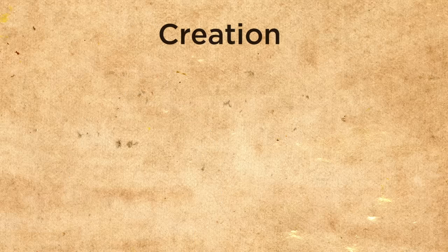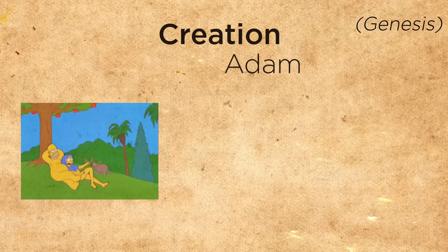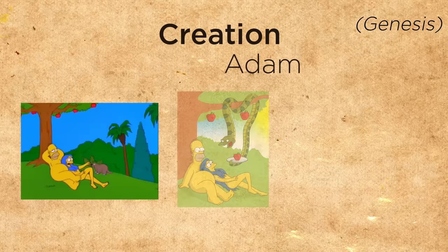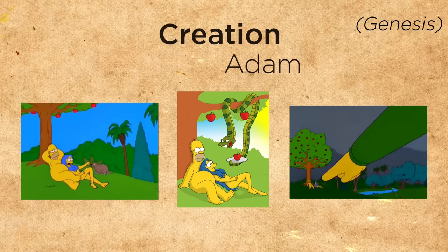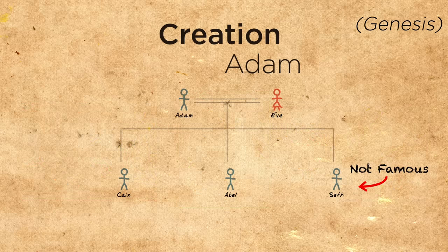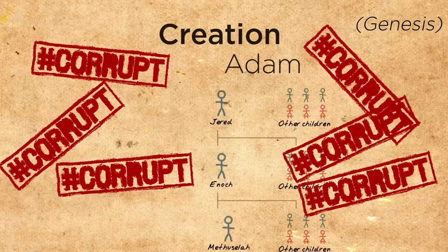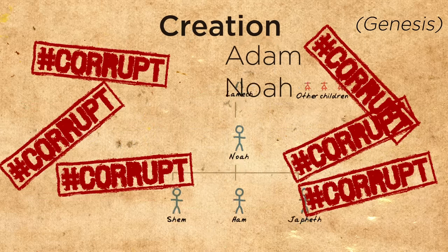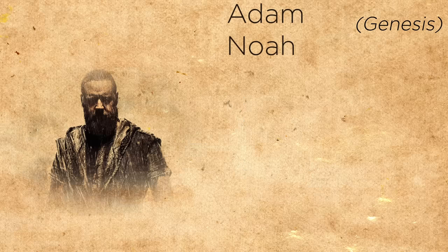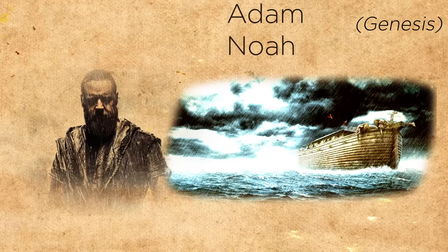It all begins with creation in the Garden of Eden with Adam. God creates Adam and Eve and places them into authority over all creation. Deceived by Satan, Adam and Eve sin and they're kicked out of the garden. They have a few sons, most famously Cain and Abel. Over the next few generations, great corruption fills the earth and we meet Noah. Noah and his family build an ark and they along with the animals on board survive the great flood, which destroys pretty much everything else.